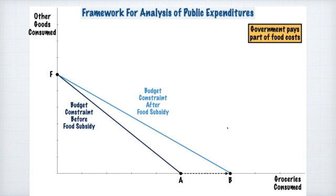The key thing to notice is that this causes the slope of the budget constraint to change. We have a different slope with the new budget constraint after the food subsidy — for example, with the food stamp program — than before. This introduces a distortion because it changes the ratio of prices. Because the price ratio is different, the slope of the budget constraint is different, and that changes the relative prices of these commodities.